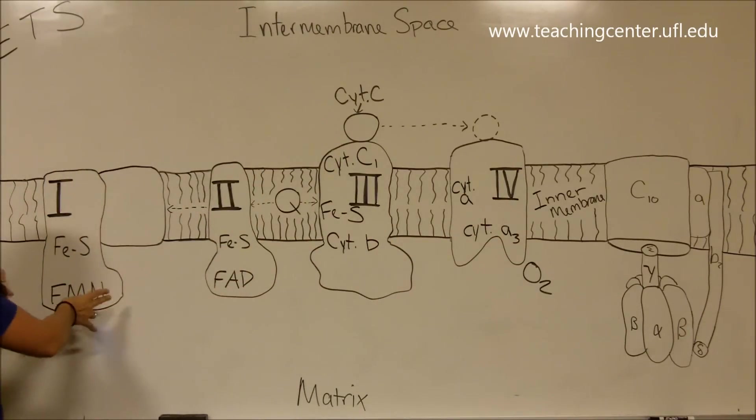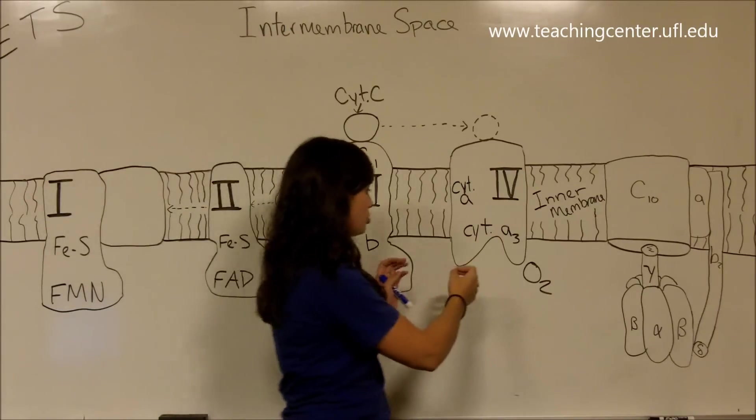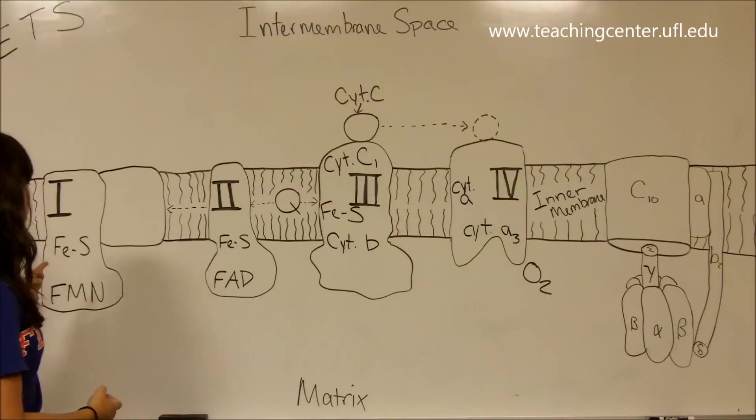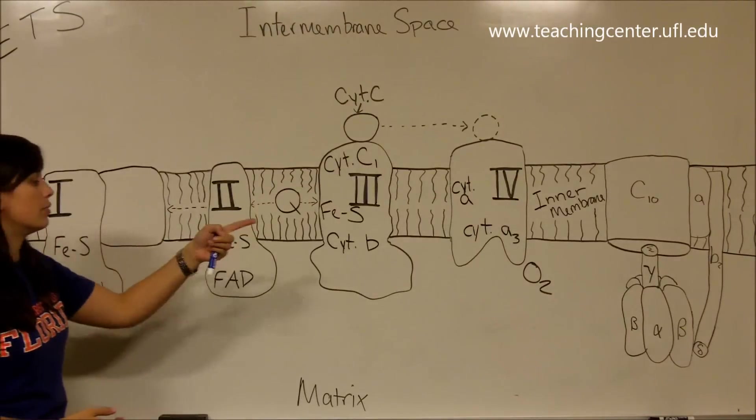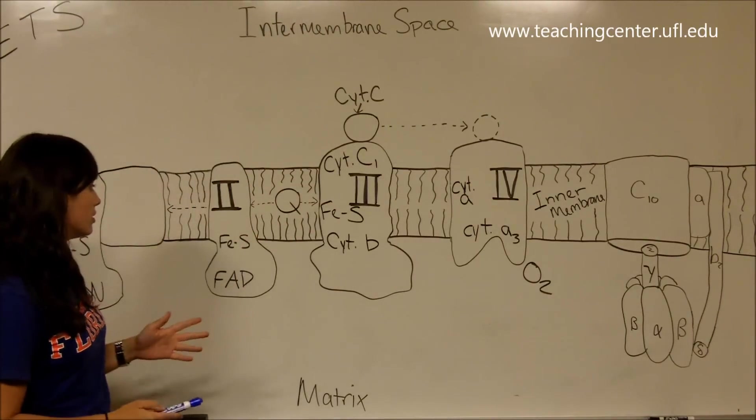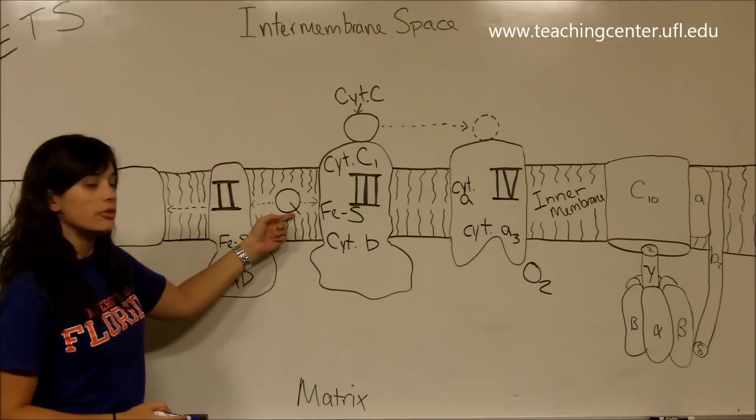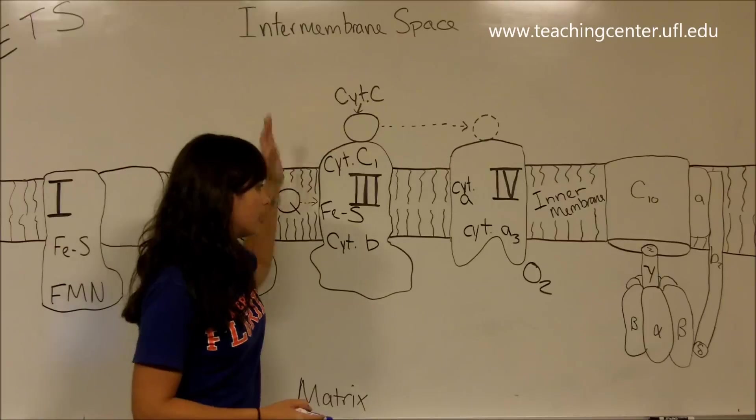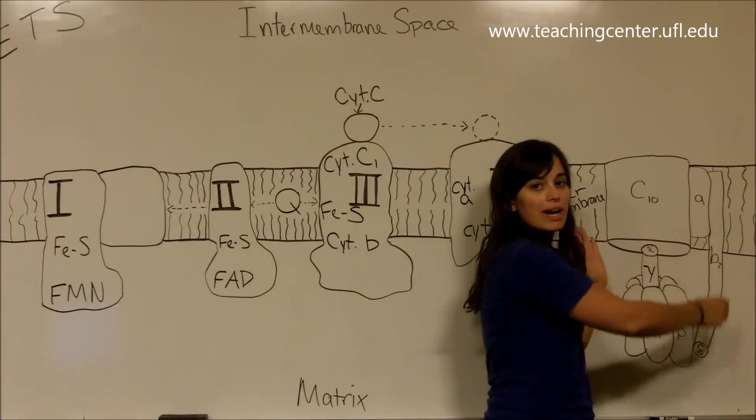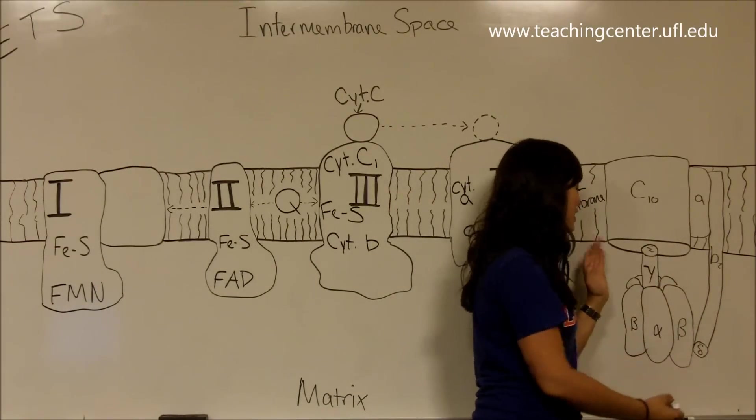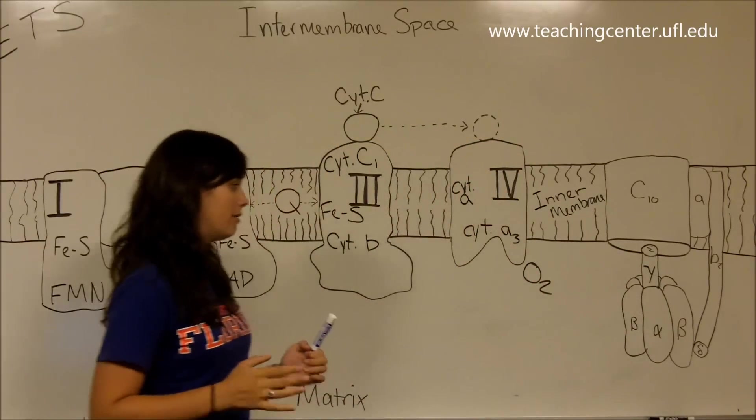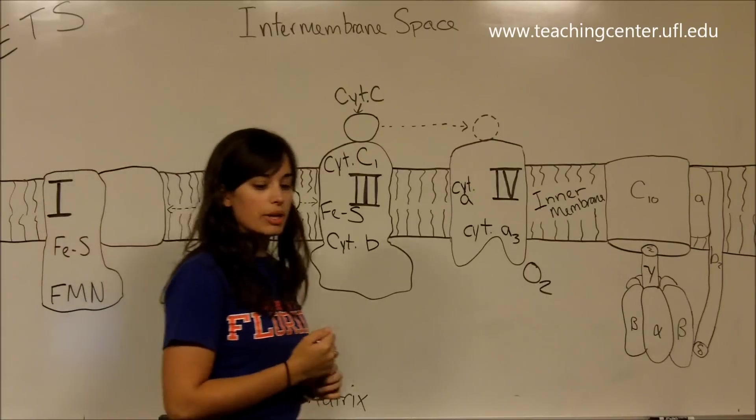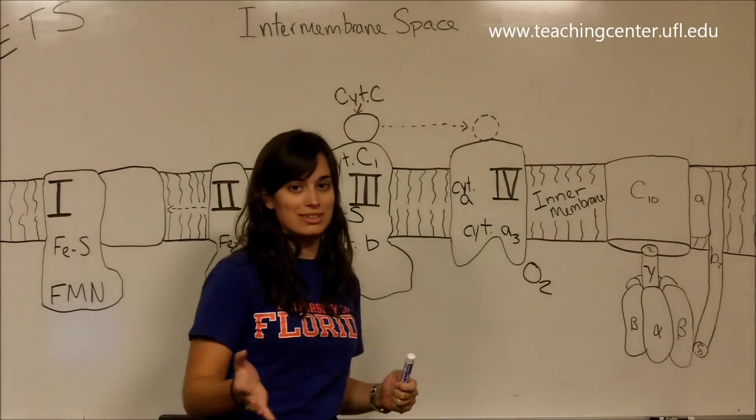These here are all the electron transport chain complexes labeled 1, 2, 3, and 4. We have ubiquinone coenzyme Q right here, cytochrome C up here, and all the way over here we have our ATP synthase. That is not directly part of the electron transport system, so don't get confused, but it is definitely related.